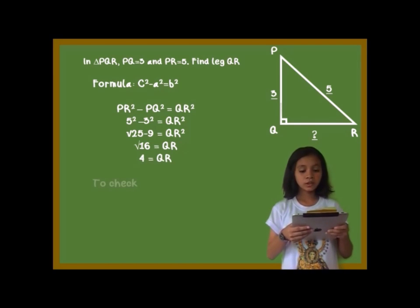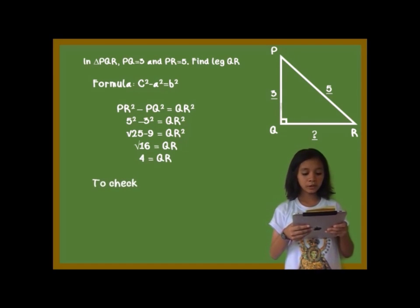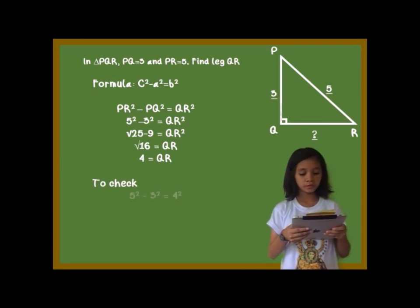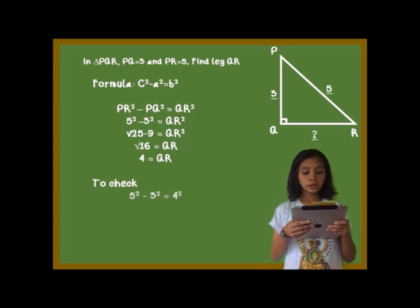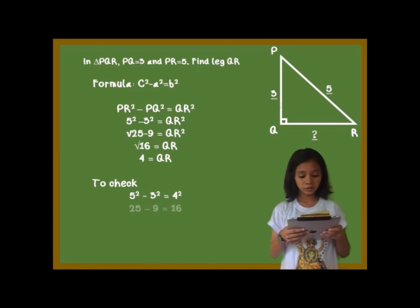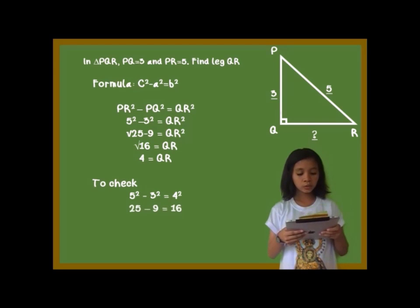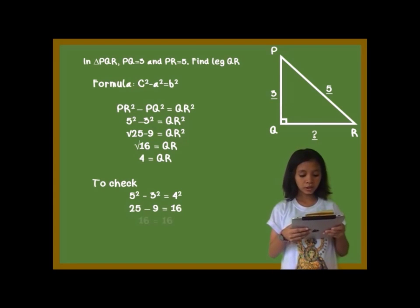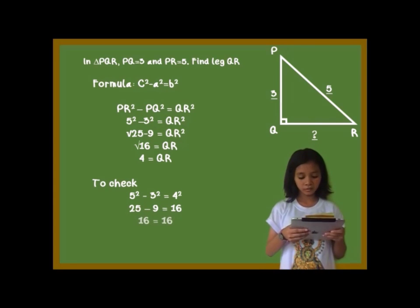To check: QR squared is equal to PR squared minus PQ squared. 4 squared is equal to 5 squared minus 3 squared. 16 is equal to 25 minus 9. 16 is equal to 16.